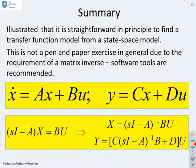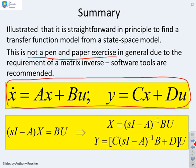So a summary. We've illustrated that it's straightforward in principle to find a transfer function model from a state-space model. But we've also emphasized this is not a pen and paper exercise in general due to the requirement for a matrix inverse, and I would recommend you use software tools. But the bottom line is if you've got this state space model - x dot equals Ax plus Bu, y equals Cx plus Du - then the transfer function model is given here: C(sI - A)^-1 B + D.